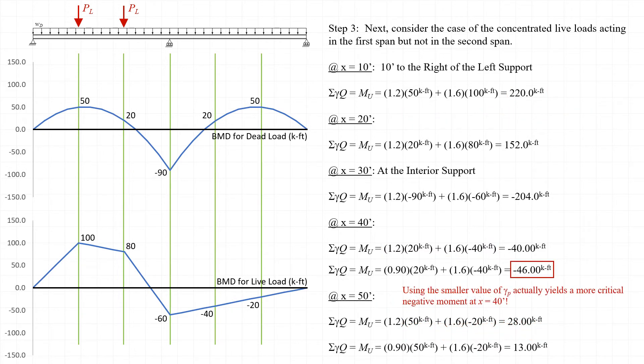As you can see here, evaluating the load combinations in span 2 with the minimum values of the dead load factor actually results in more critical values for the factored moment Mu.